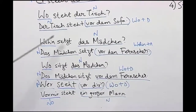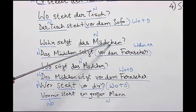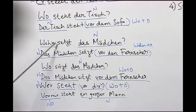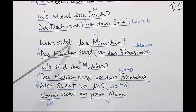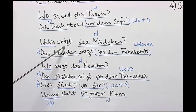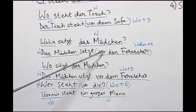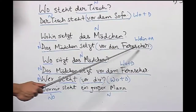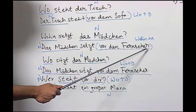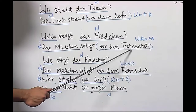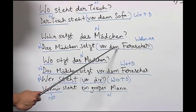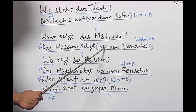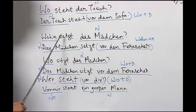Now let us look at another example: Wohin setzt das Mädchen? Das Mädchen setzt sich vor den Fernseher. Since the question is 'wohin' and we have the verb 'setzen', which is an accusative verb, 'vor' is used as an accusative preposition. Nouns ending in -er are usually masculine; the article for Fernseher is 'der Fernseher', which in accusative becomes 'den Fernseher'. Since 'vor' is an accusative preposition, we get the answer for the wohin question.